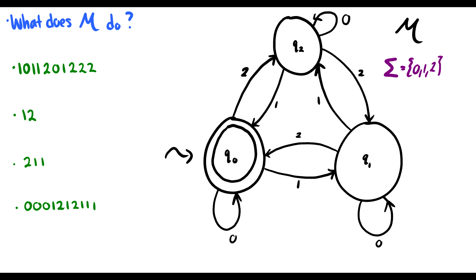Let's start with this 1, 2 first, because this one's pretty quick. Where do we start? We found the squiggly arrow. It points at Q0. So we start at Q0. First we read 1. Let's go to Q1. Then we read 2, which takes us back to Q0. So this 1, 2 is accepted, because we end in the accept state Q0.